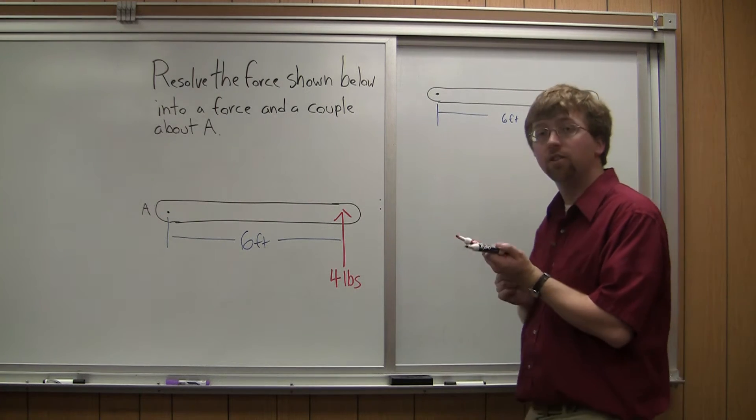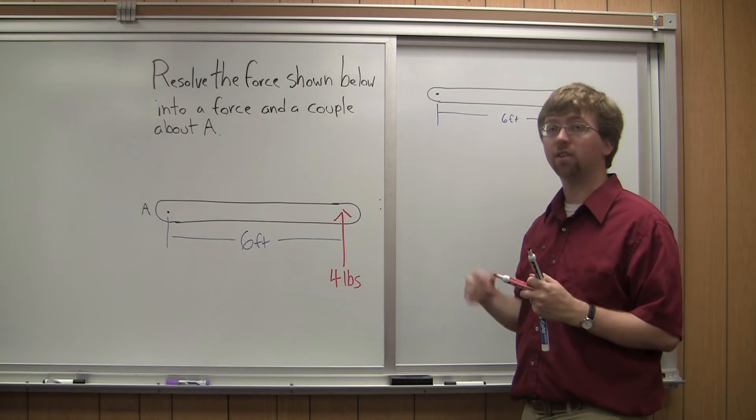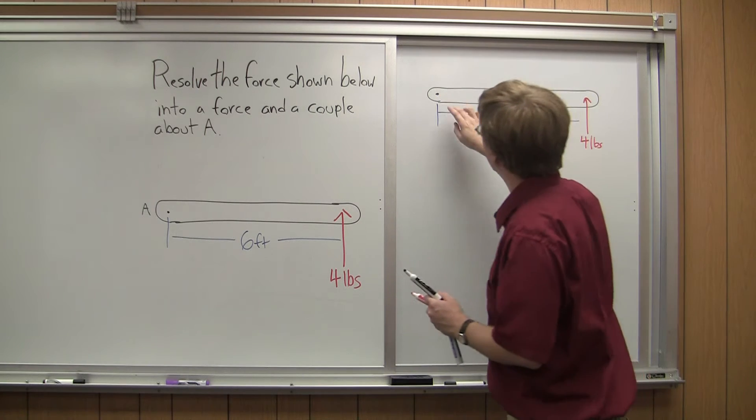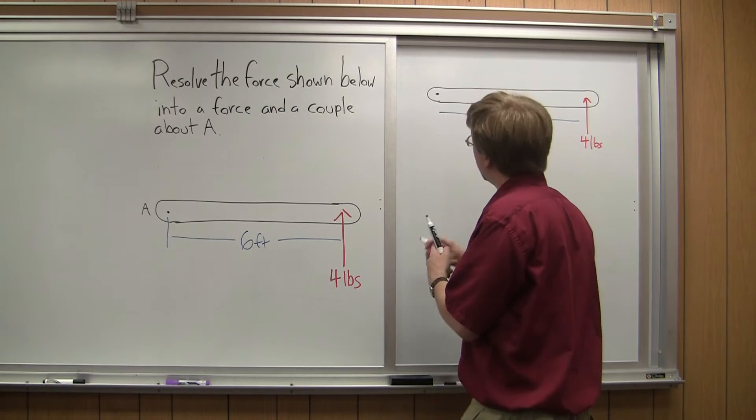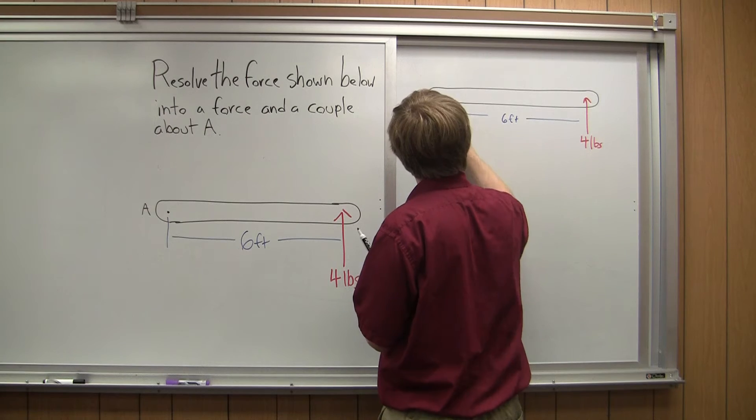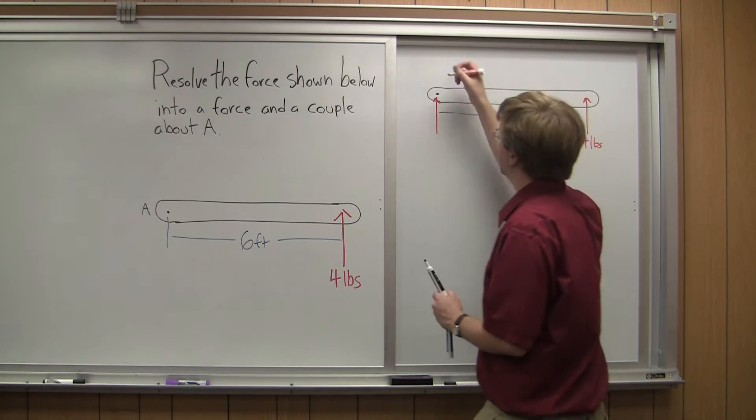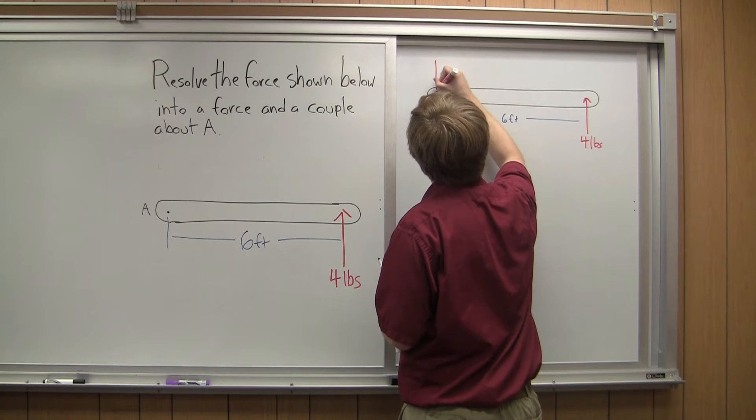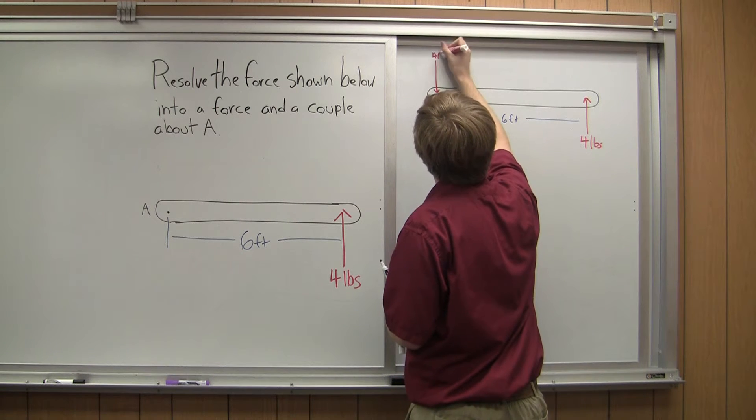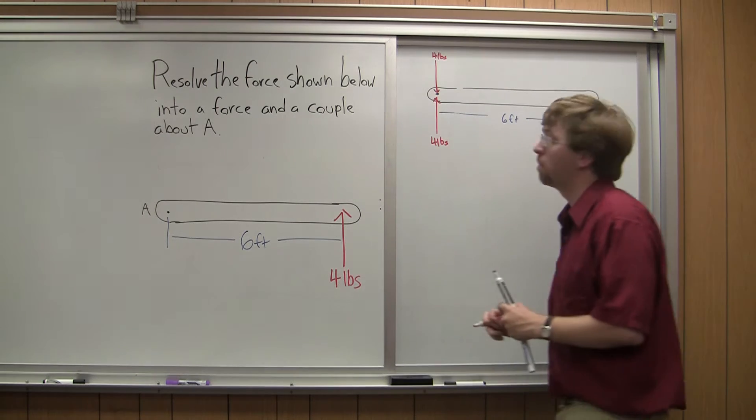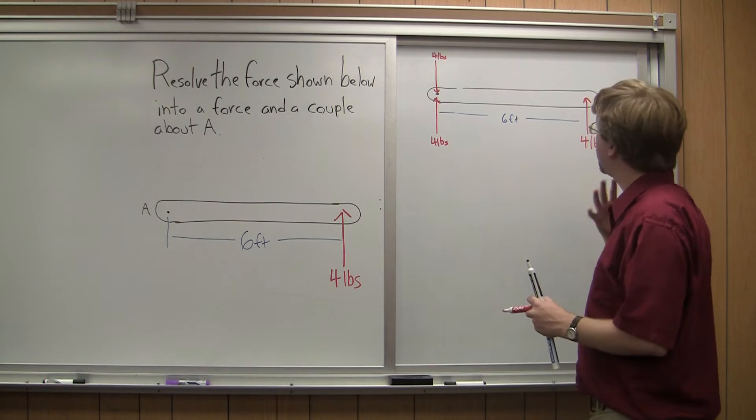Alright, so the first step in doing this, kind of conceptually, is to think about adding a 4-pound force over here. So I add that force. And I'm going to add an equal and opposite force at the same point. So I've got 4 pounds down, and then 4 pounds up like that. So now I've got 3 forces.